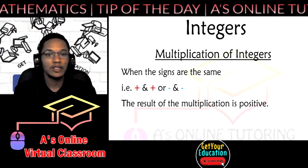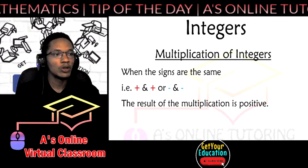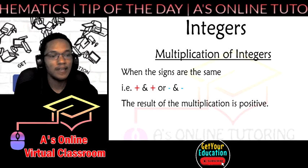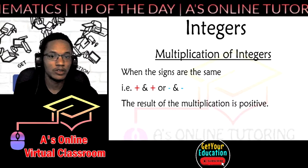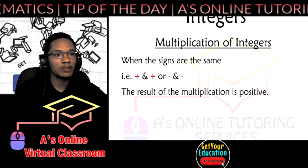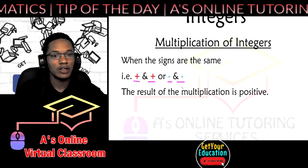Now when it comes to multiplication, it's similar to the addition in that when the signs are the same, the result of the multiplication is positive. It doesn't matter if we have two positive numbers or two negative numbers as we can see here.